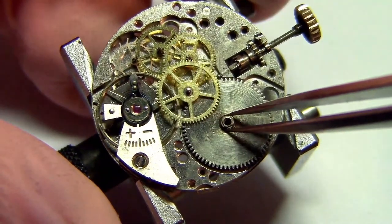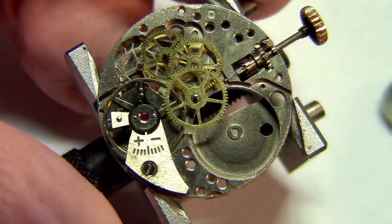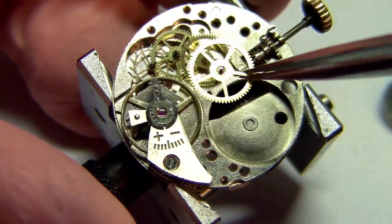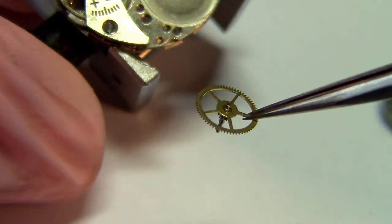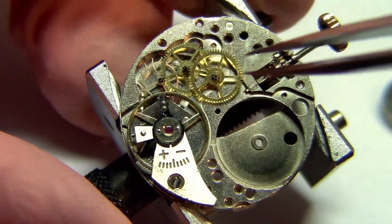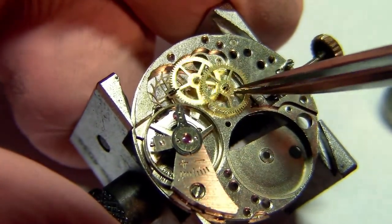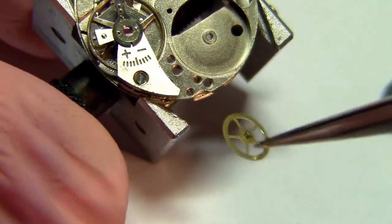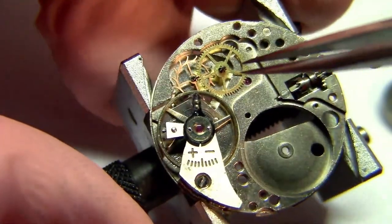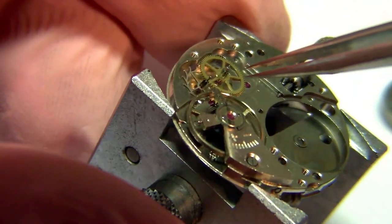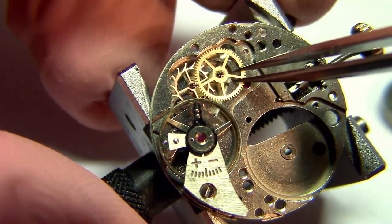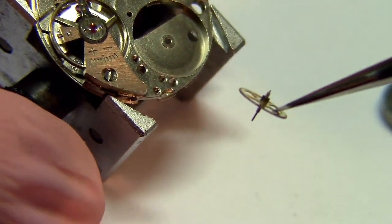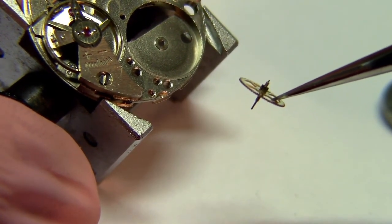The energy goes through the center wheel that spins at a speed of one turn per hour, and then to the third wheel or intermediate wheel. This is the fourth wheel or second wheel that, as the name says, spins at one turn per minute or one turn every 60 seconds. The ISO is a little longer as well because on the other side is exactly where the second hand is mounted in watches that have a central second hand.